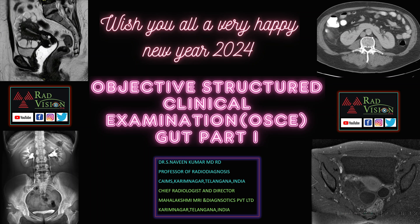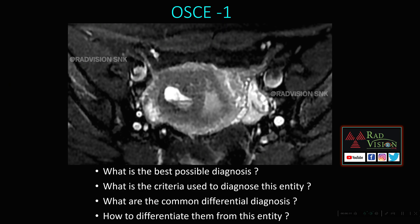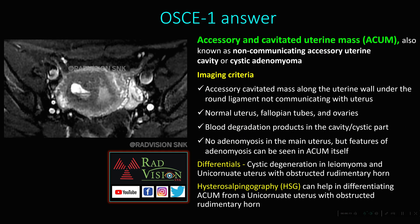Good evening all, welcome to this new session: Objective Structured Clinical Examination — GUT Part 1. I wish all my subscribers a very happy new year 2024. Coming to the first OSCE, you can pause the slide and see all the questions. What is the best possible diagnosis here? You can see there is a cystic lesion noted within the uterine wall with fluid levels, seen separately from and not communicating with the endometrial cavity. The diagnosis is Accessory and Cavitating Uterine Mass — that is, ACUM.